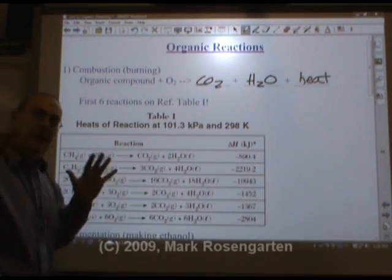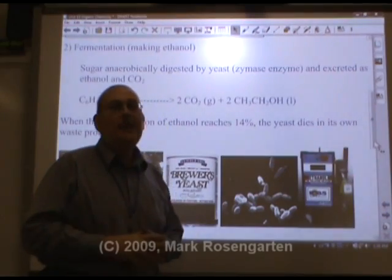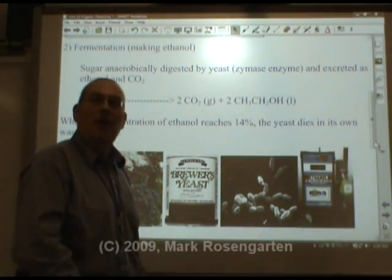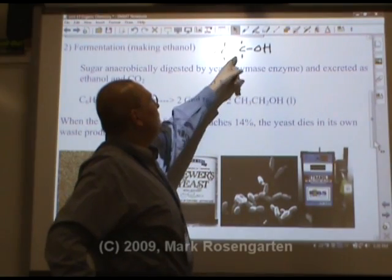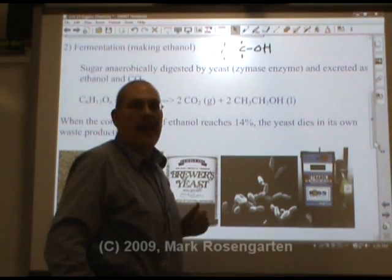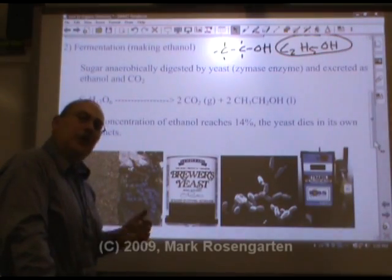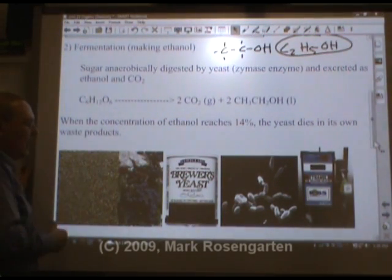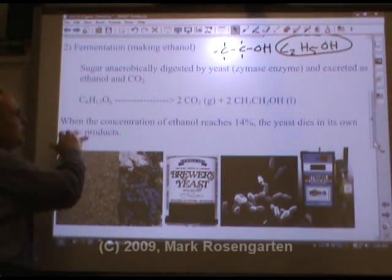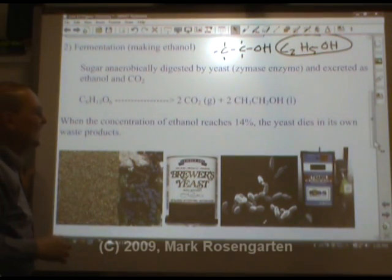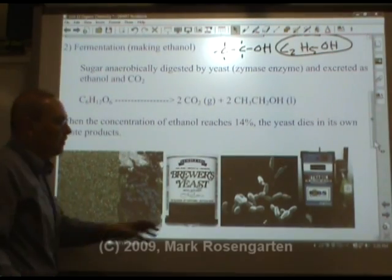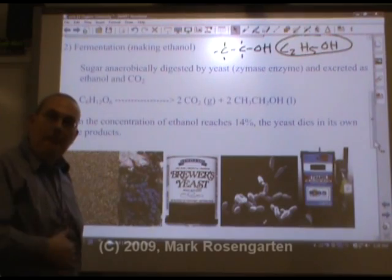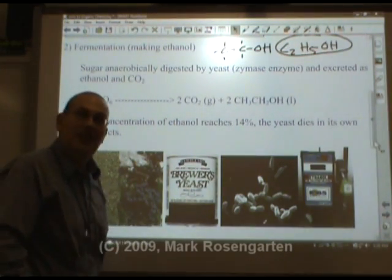The second organic reaction is fermentation, which makes ethanol — ethyl alcohol, otherwise known as C2H5OH. To make ethanol you need a source of sugar. This sugar can come from many different sources: it can come from grains or from fruits. The simple sugar glucose gets eaten by yeast — these are yeast particles right here, they're actually alive and they eat the sugar.